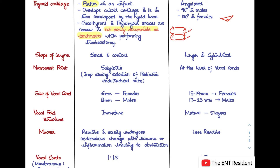Regarding the shape of the larynx: the infant larynx is very small and conical or funnel-shaped, whereas the adult larynx is much larger and cylindrical.